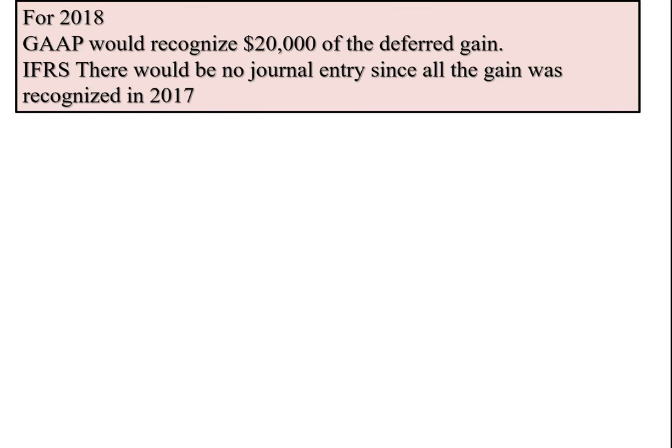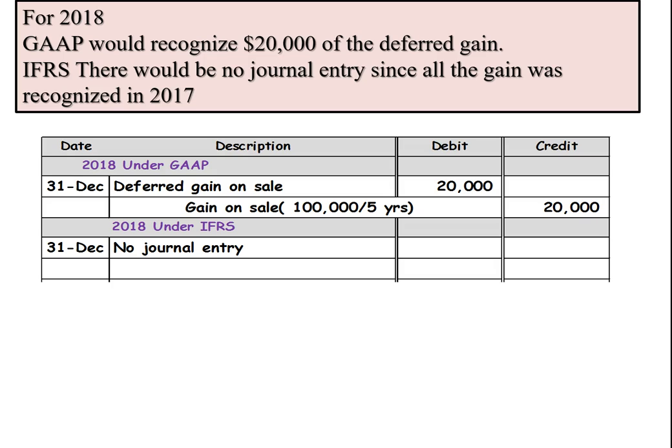For 2018, GAAP would recognize another $20,000 of the deferred gain. Under the international standard, there would be no journal entry because we've already recognized all the gain. For GAAP, we would again recognize $20,000 at the end of the year of that deferred gain, now leaving $60,000 on the books. Under the international standard, there would be no journal entry.